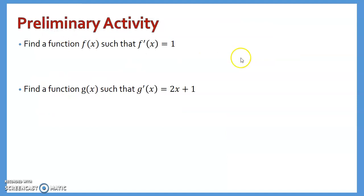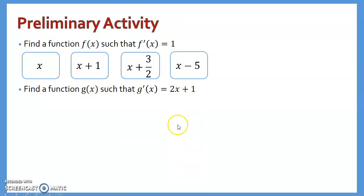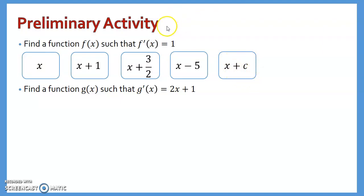Let's start with this activity to introduce the lesson. Find a function f(x) such that f'(x) = 1 — think of a function whose derivative gives you 1. You should think of x, since the derivative of x is 1. Can you think of other functions? What about x + 1? What about x + 3, or 2x − 5? More generally, x + C where C is any constant — the derivative of C is 0, so the derivative of x + C is always 1.